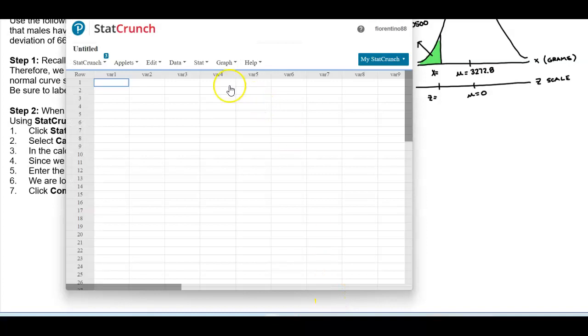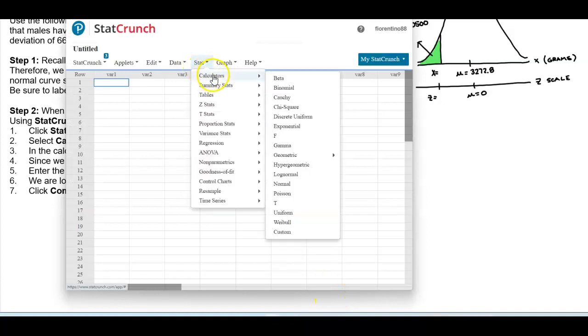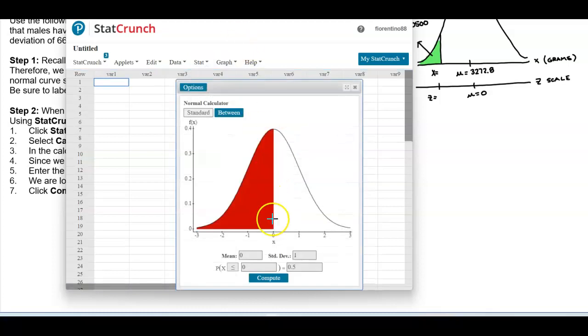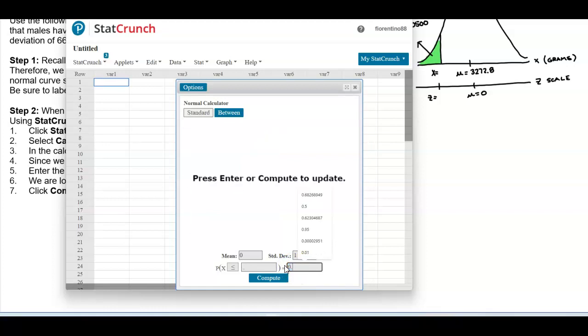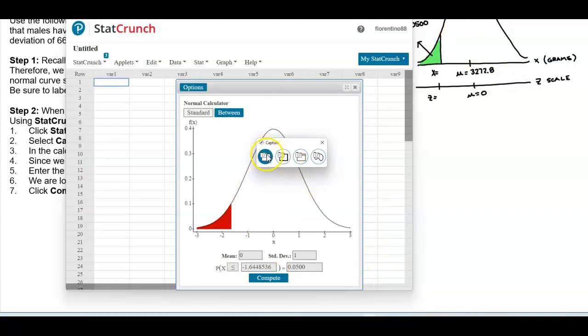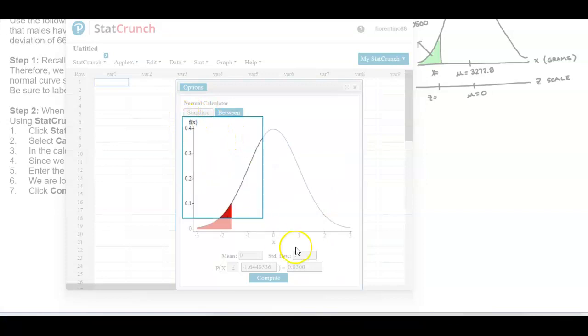So opening up StatCrunch, go to Stat, Calculators, scroll all the way down to Normal. Okay, we want to make sure our mean is zero, our standard deviation is one, which is correct. We see that our inequality is the less than or equal to. So now here down the bottom we want to change our area to be 0.0500 and now let's select compute. Now this should match exactly the graph that we have drawn. So let's go ahead and copy that and then compare it.